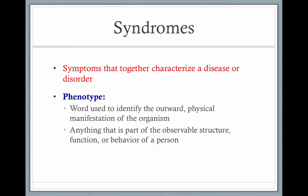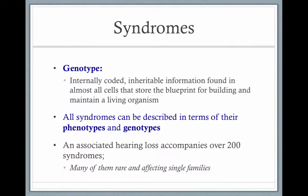Syndromes are symptoms that together characterize a disease or disorder. You can think about the phenotype, which is the outward physical manifestation of an organism, or the genotype, which is the internally coded information. So you could have little b little b as your genotype and blue eyes, or big B little b and brown eyes as your phenotype. All syndromes can be described in terms of their physical phenotypes and their genotypes, and an associated hearing loss accompanies over 200 syndromes, many of them rare.